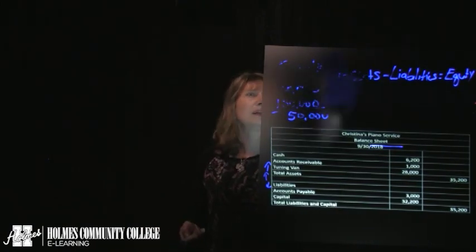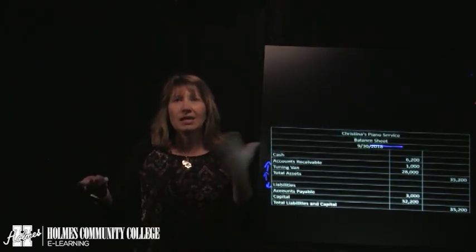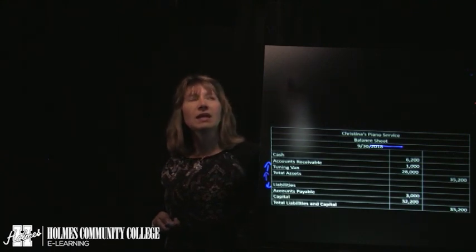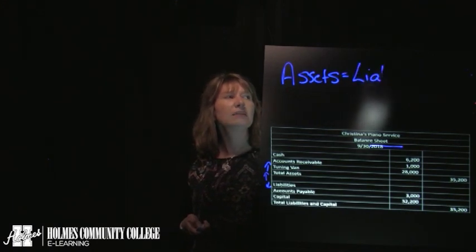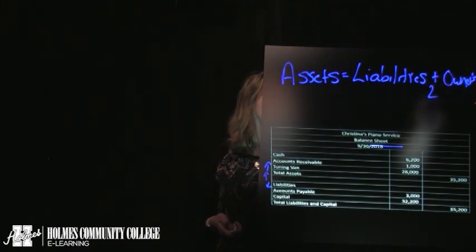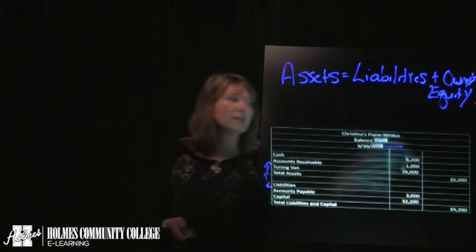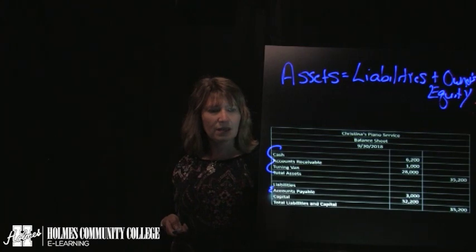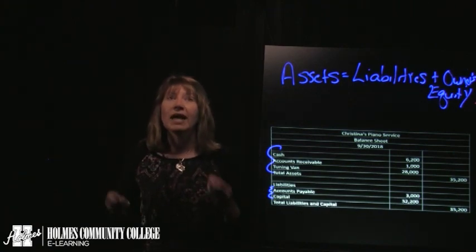Next we're going to talk about the balance sheet. In accounting, we stay in balance by using the accounting equation: assets equals liabilities plus owner's equity. The balance sheet shows that we're in balance — here's our total assets, and here's our total liabilities plus our owner's equity, also called capital. The balance sheet is a formal presentation of the accounting equation.